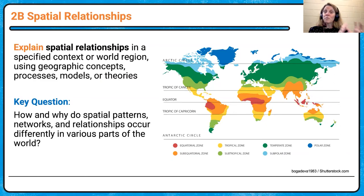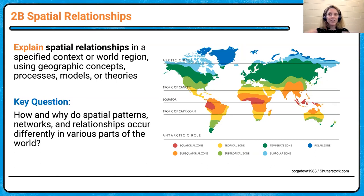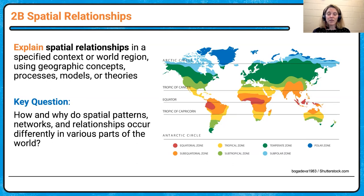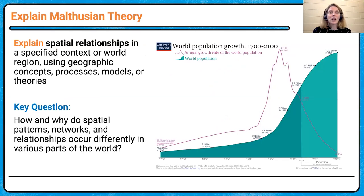Now we shift to skill two — explaining those specific spatial relationships: the how and the why. I would always first describe patterns, then go into the how and why. Looking at some climate trends, we examine the temperate zone through mid-latitudes and the tropical zone between the Tropic of Cancer and Capricorn. We want to understand the impact on crops, productivity, and population density. That might be the why — but how does it then impact those other things?